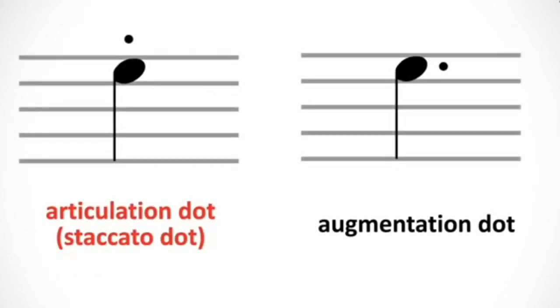In summary, articulation or staccato dots are placed vertically above or below a note. Augmentation dots, however, are placed horizontally compared to the note head, just to the right.